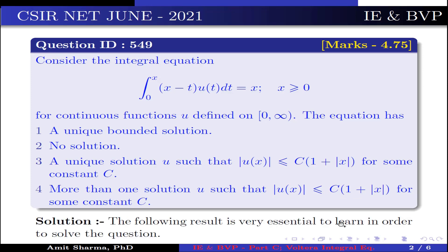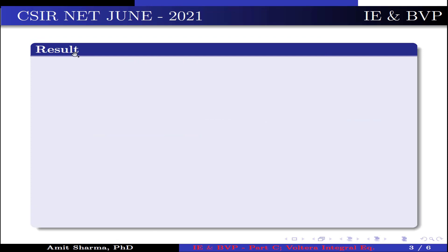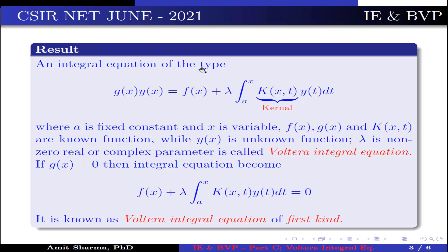The following result is very essential to solve the equation. An integral equation of the type g(x)·y(x) = f(x) + λ·∫[a to x] K(x,t)·y(t) dt, where K(x,t) is the kernel, a is a fixed constant, x is variable, and f(x), g(x), K(x,t) are known functions while y(x) is the unknown function, and λ is a non-zero real or complex parameter, is called a Volterra integral equation.